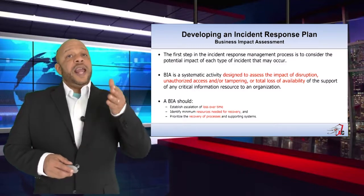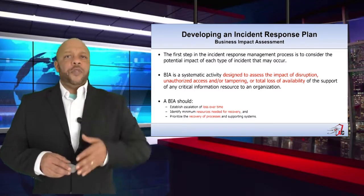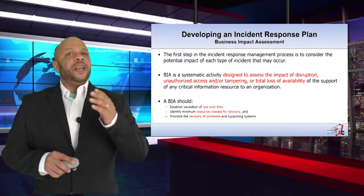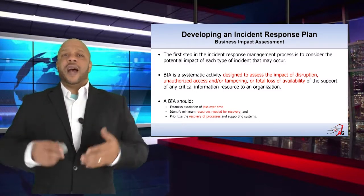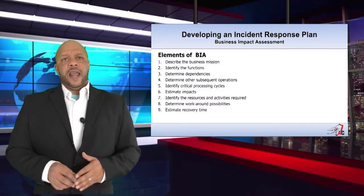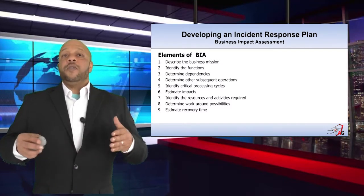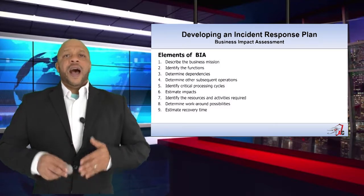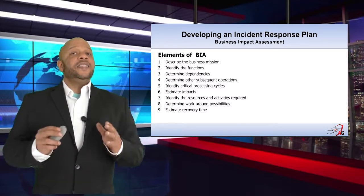To assess potential impact, you need a BIA. The BIA is a systematic activity designed to assess the impact of disruption, unauthorized access, and tampering or total loss of availability. Your BIA should establish escalation of loss over time, identify the minimum resources needed to recover, and prioritize the recovery of processes and supporting functions. The nine core elements of the BIA are: describe the business mission, identify the functions, determine dependencies, determine other subsequent operations, identify critical process cycles, estimate impacts, identify required resources and activities, determine workaround possibilities, and estimate recovery time.